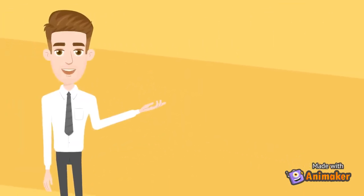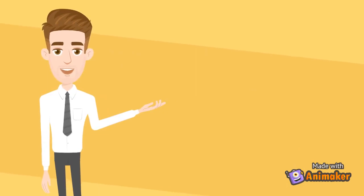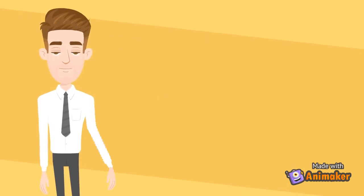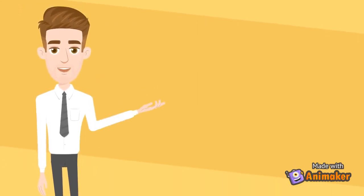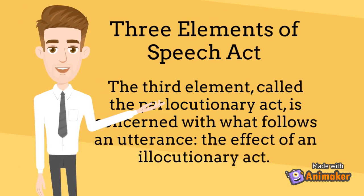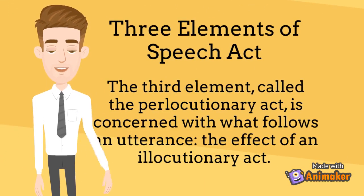The third element, called the perlocutionary act, is concerned with what follows an utterance — the effect of an illocutionary act.